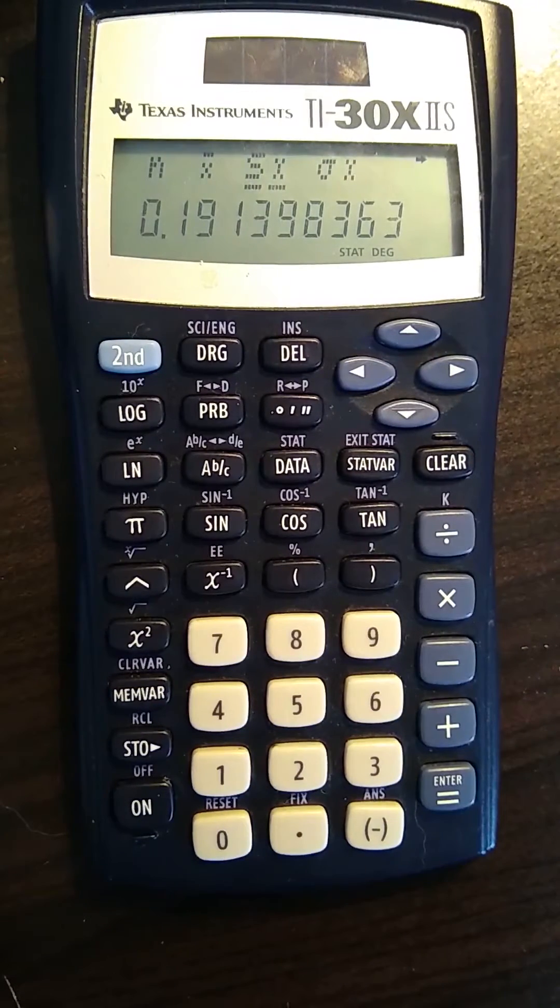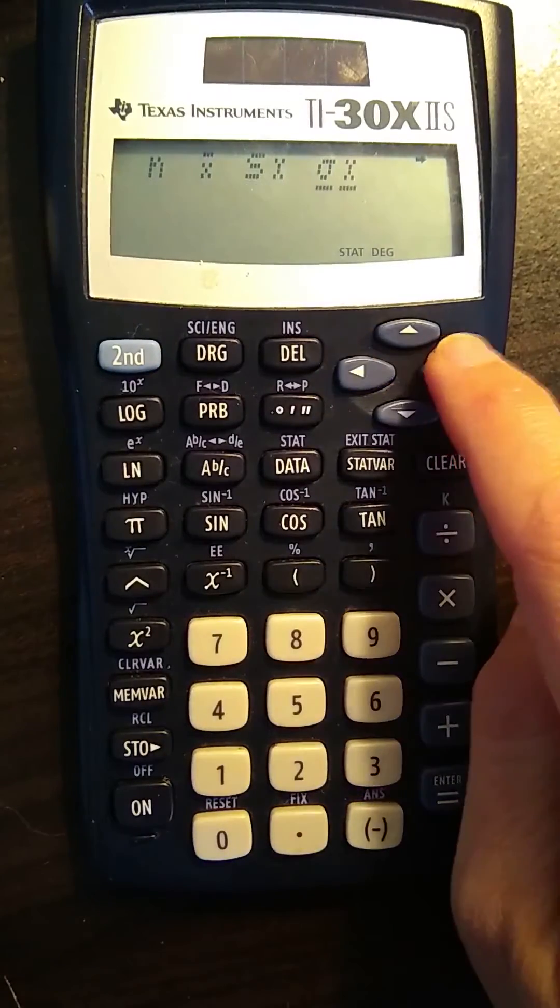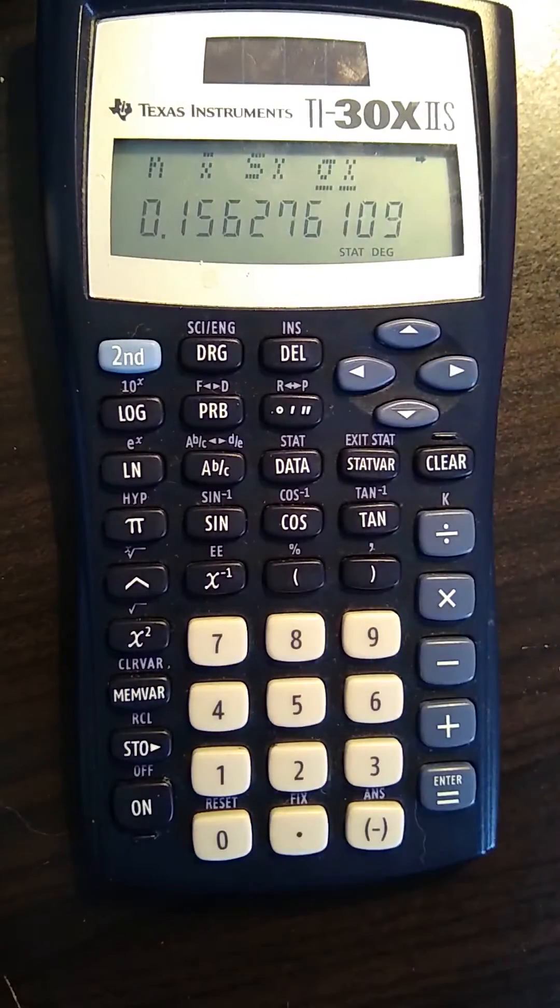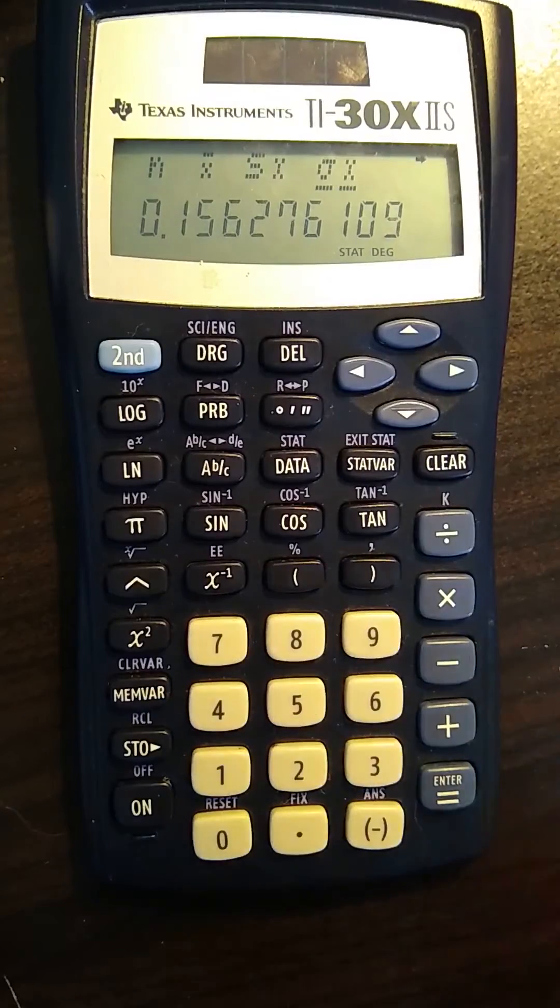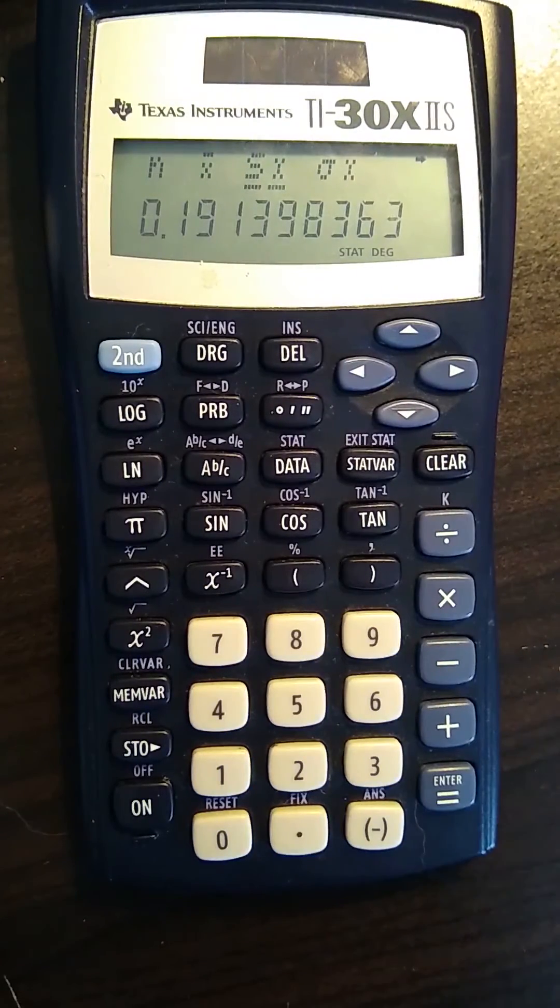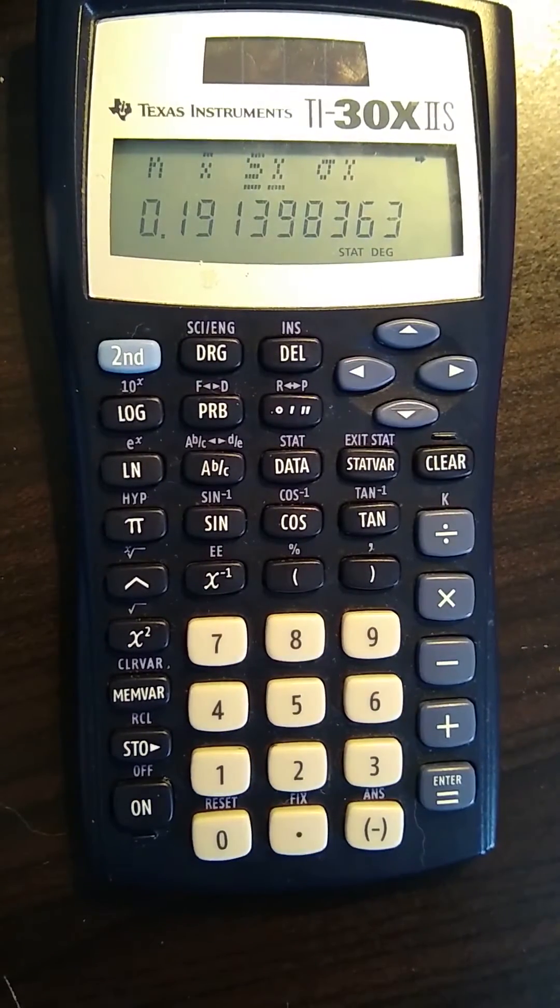If I press the over button one more time, this is the standard deviation and this is the one you want. There's s sub x and sigma sub x. Sigma sub x assumes that the population is nearly infinite, a very large population. We know that we only have a few values, we want to be looking at s sub x.